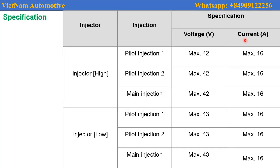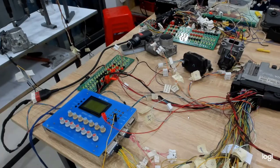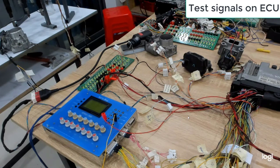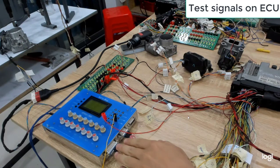Now I guide you how to check the ECU signal to control the injector on the vehicle and with only the ECU. To check the ECU signal with only the ECU, you need an ECU detector. As you can see, I use the ECU detector — this is the ECU detector.